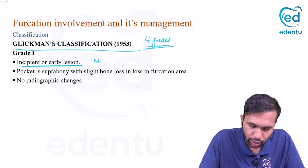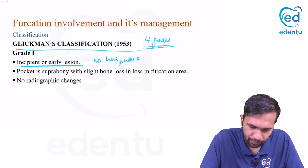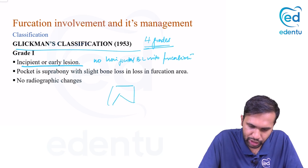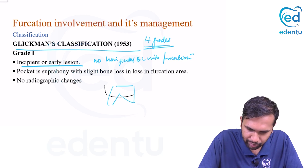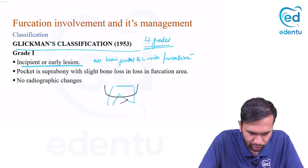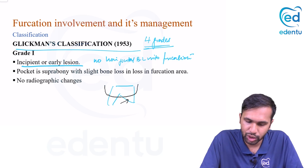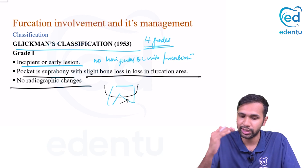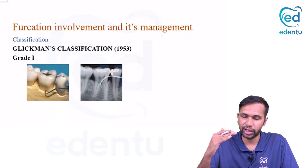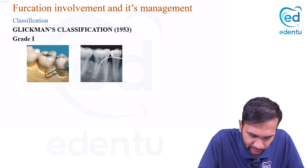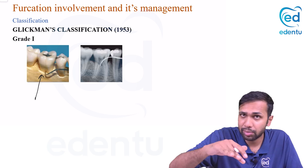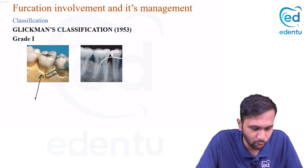Grade one is the incipient or early lesion — the furcation has just begun to get involved in periodontal disease. There is no horizontal bone loss into the furcation. The furcation region has been exposed due to periodontal bone loss but there is no bone loss extending horizontally into it. The pocket is usually suprabony with slight loss of bone in the furcation region and no radiographic changes.